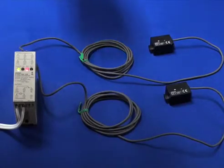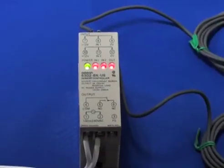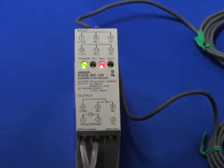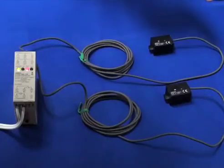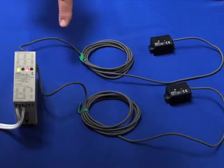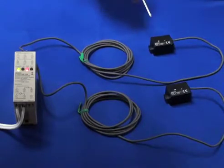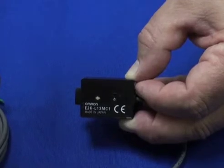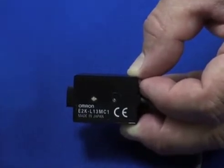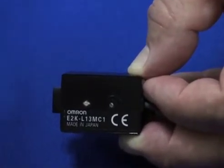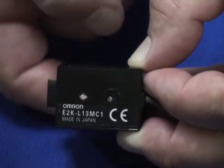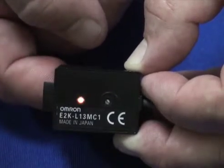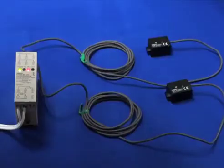In particular, in this setup we have the S3D2-BK as you can see here, and we have two capacitive proximity sensors wired into it. They are the E2K-L13MC1. These are sight glass proximity sensors, and as you can see I have LED indication for when each sensor turns on and off, and you can also see the indication on the sensor controller.